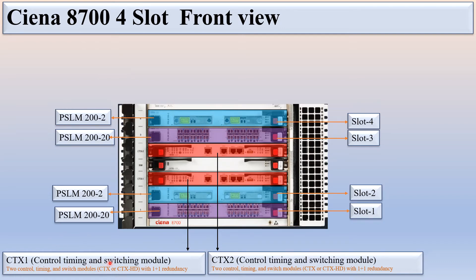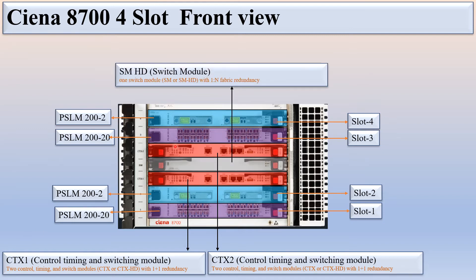You can see here CTX1 and CTX2 — these are the control timing and switching modules. You can insert either a CTX card or CTX-HD card, and this card operates in 1+1 redundancy. In the 4-slot CNI 8700 there are 2 CTX cards: CTX1 and CTX2. In between them there is a switch module — the SMHD or SM switch module — with 1-column fabric redundancy.